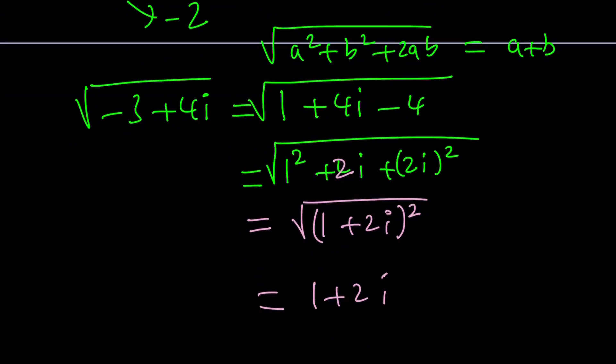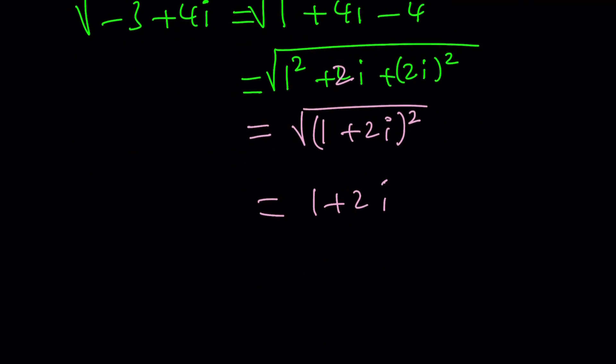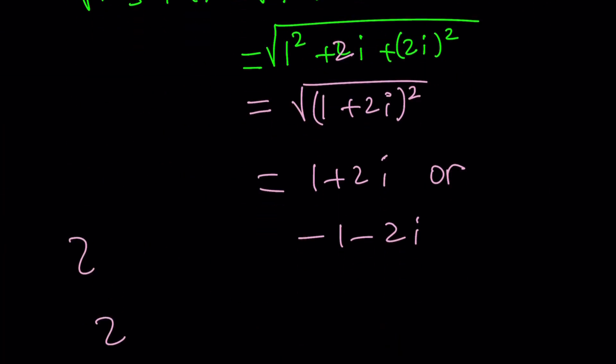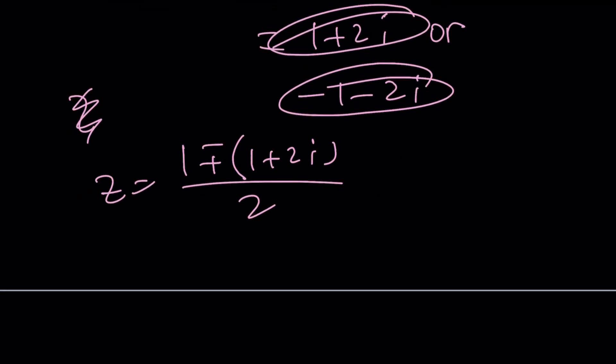And that's what we're looking for. And the other one is just going to be the opposite of this. So we got it, right? So this number has two square roots, 1 plus 2i or negative 1 minus 2i. And we're going to use both of them. But let's go back to our expression z equals 1 plus minus the square root of this expression. Now, the plus minus is there for a reason. It's just going to take care of both of these solutions.